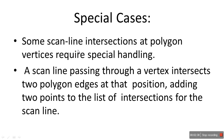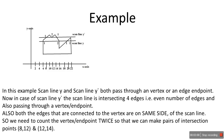For these special cases, scanline intersections at polygon vertices require special handling. When a scanline passes through a vertex it intersects two edges at that position, so we may need to add two points to the list of intersections. For example, we have scanline y-dash and scanline y — both pass through a vertex or edge endpoint. A vertex is an edge endpoint, so let's say we have this edge and this edge passing through the endpoint.